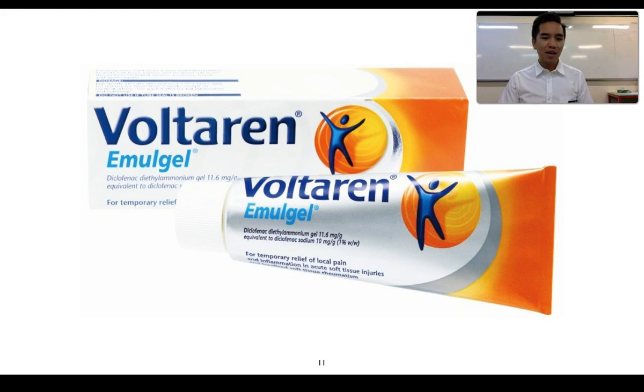We're looking now at some Voltaren emu gel, which often is needed for pain relief. If we look at the label here, we can see that we have a concentration of 1% weight per weight of this diclofenac diethyl ammonium gel.